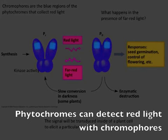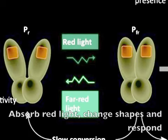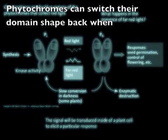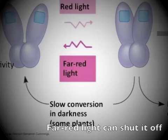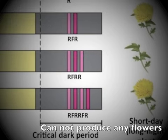Phytochromes can detect red light with chromophores. They absorb red light, change shape, and respond. Phytochromes can then switch their domain shape back when far red light shuts it off. But a short-day plant with red light at night cannot produce any flowers.